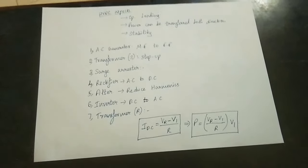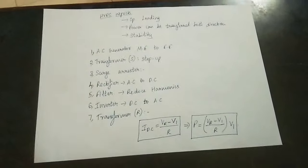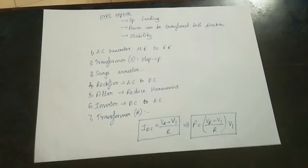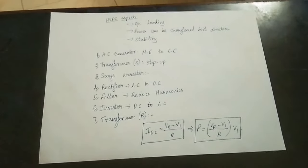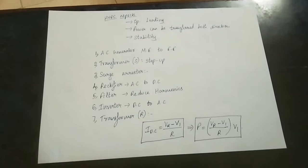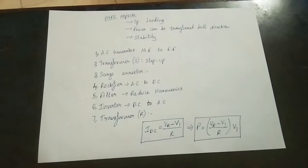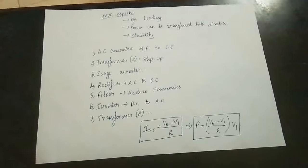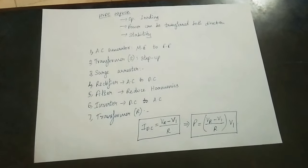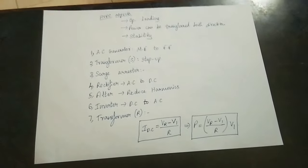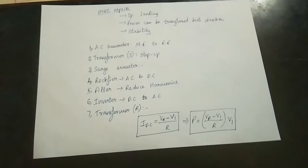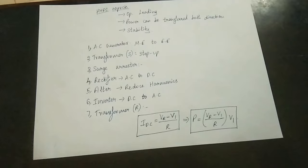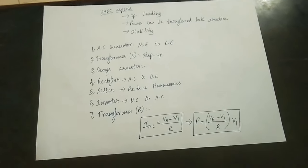DC systems can be rectified and we use filters to reduce harmonics. Harmonics are integral multiples of the fundamental frequency. Capacitive and other filters are used to reduce harmonic content in the system.